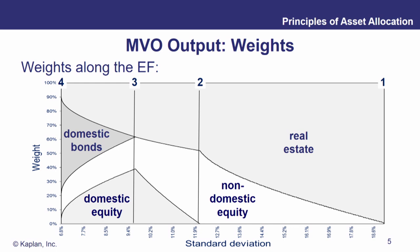Looking at portfolio two, three, and four, this graph tells us the relative weights of each asset class. Portfolio three, for example, has somewhere between 30 and 40% in domestic equity, about 25% in non-domestic equity, and pretty much the rest in real estate. Notice that domestic bonds don't really play a role in corner portfolio three. As we make the efficient frontier, we find a wide variety of asset allocations depending upon the type of client we're trying to service.